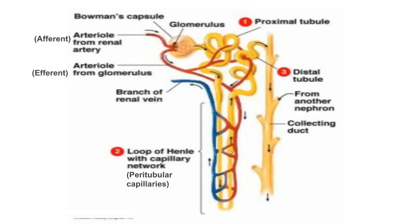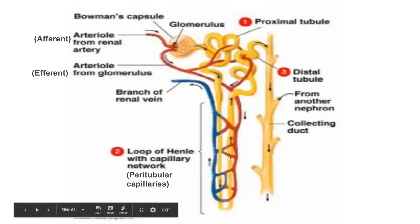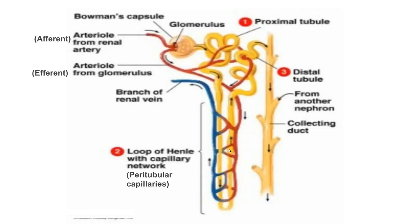The counter-current mechanism causes gradual osmotic outflow of water from the filtrate back to the kidney as it passes downward in the descending limb of the loop of Henle. In the ascending loop of Henle, water does not go out because it does not allow outflow of water. Instead, it actively transports ions into the kidney interstitium to sustain high concentration, which promotes reabsorption of water.